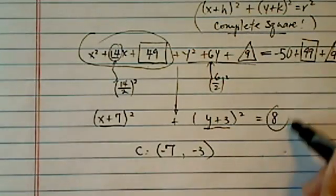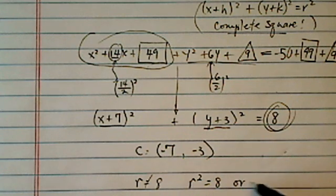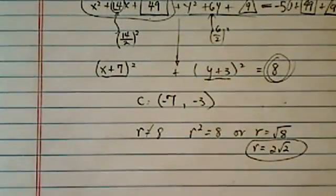Now, a lot of students forget the 8, r here is not equal to 8, so r squared is equal to 8, or r is equal to radical 8. If you have a picky teacher, you might have to simplify it down to r equal to 2 times radical 2.